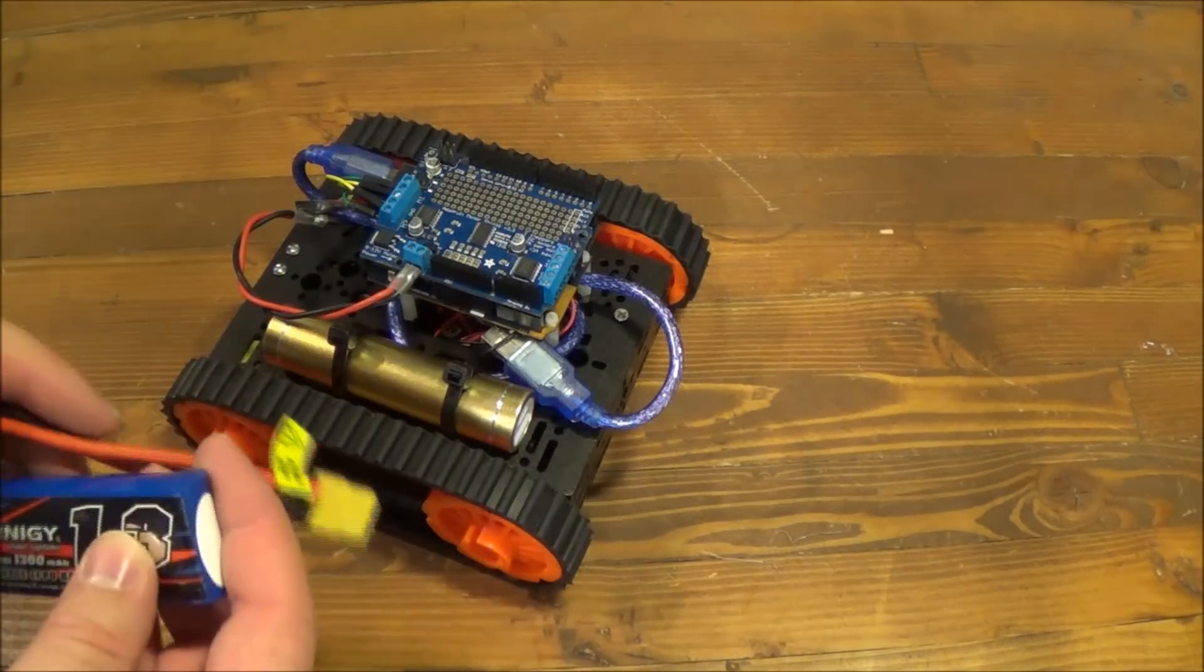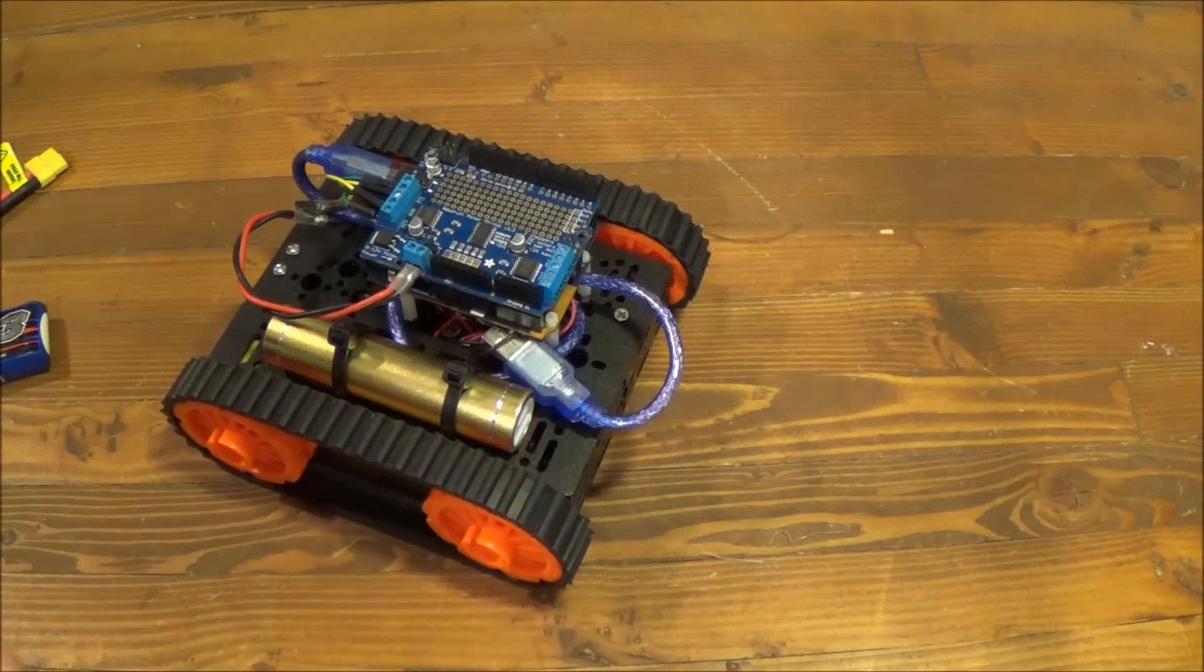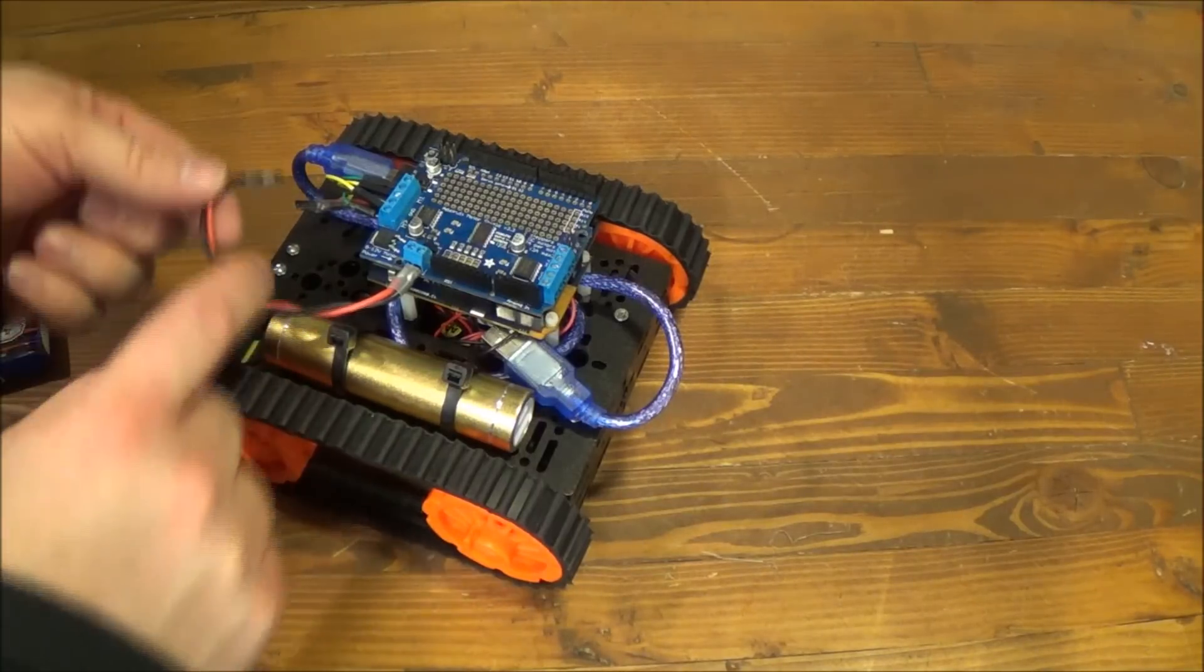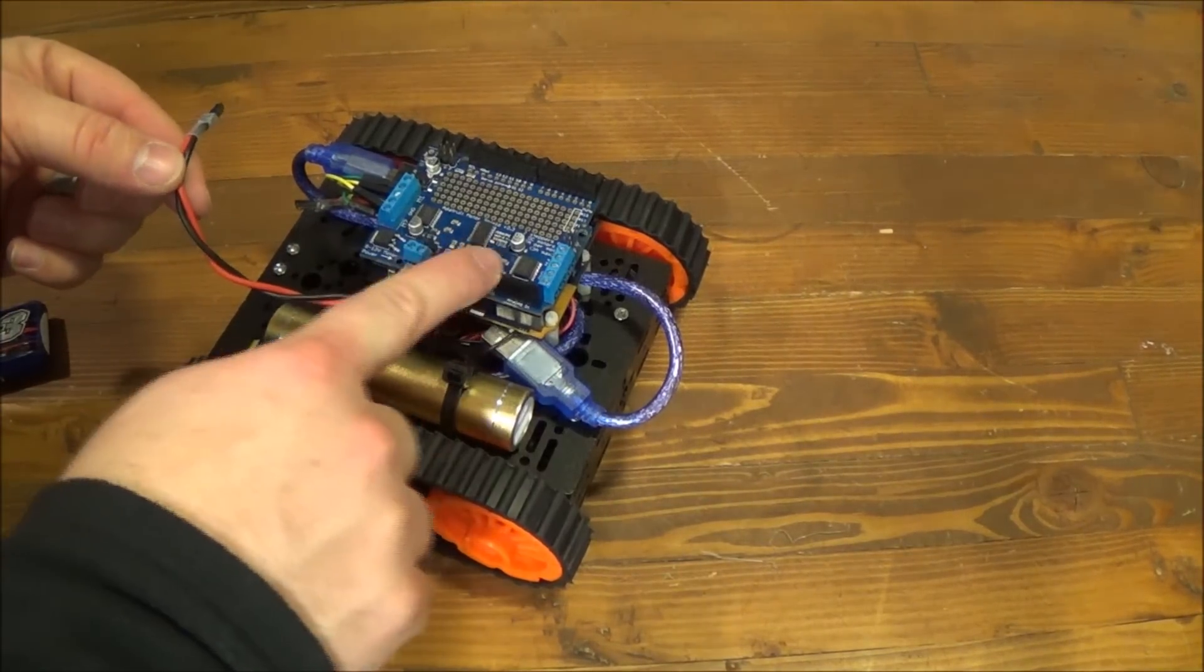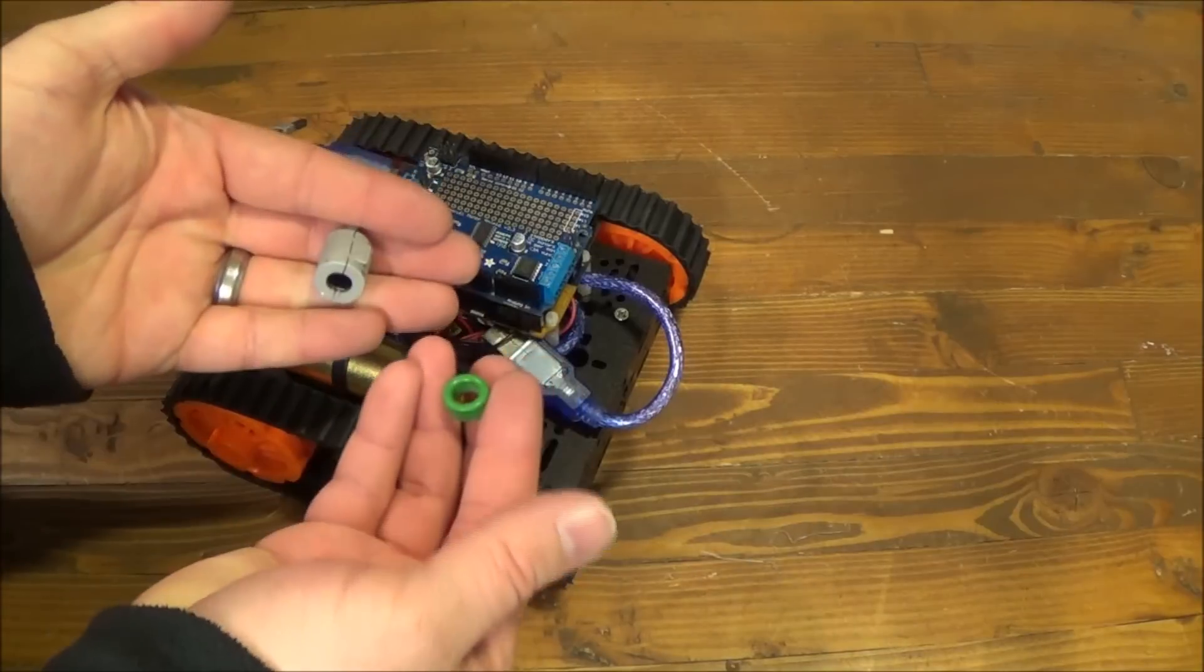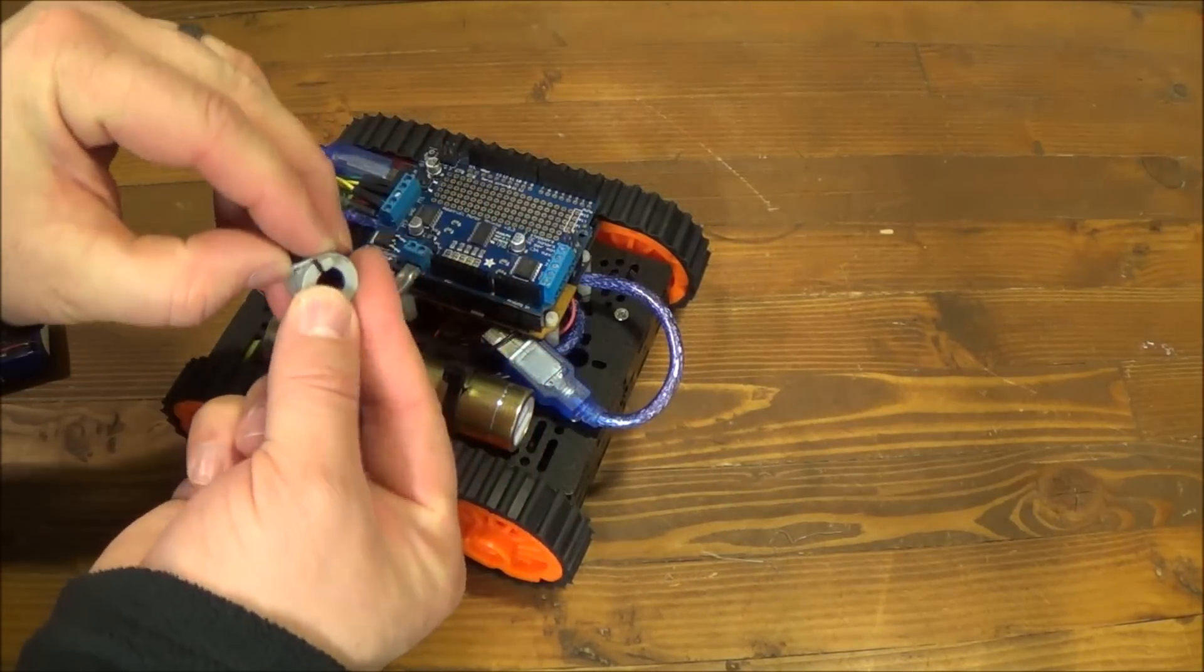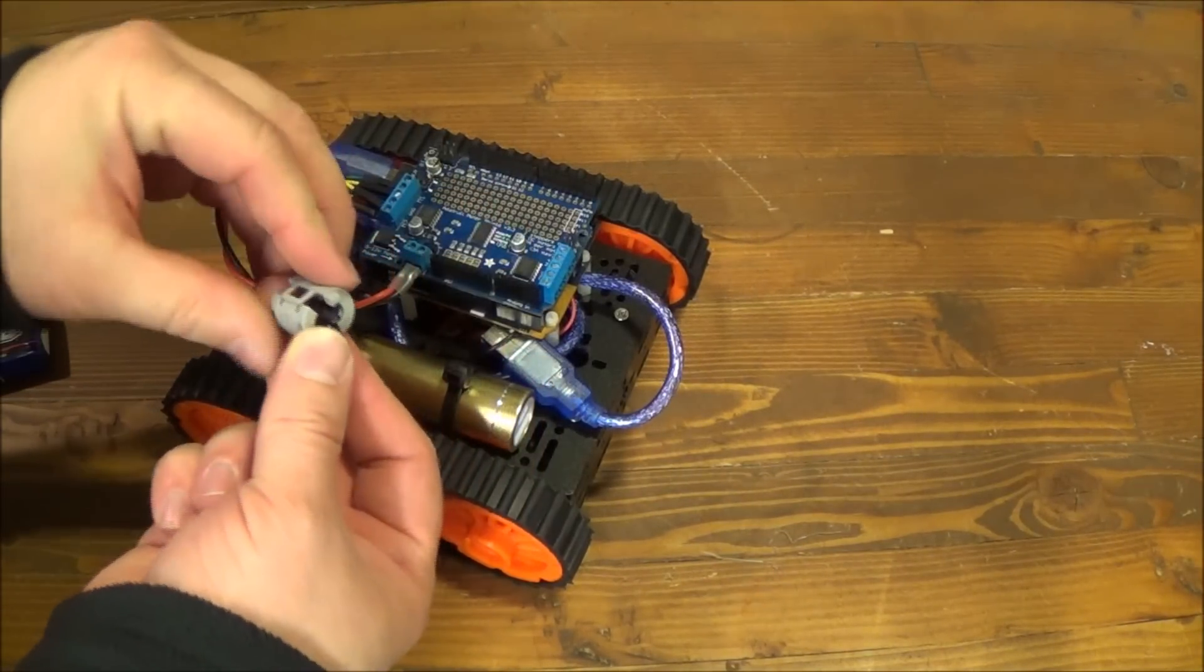One thing to note though, if you're using a single power source, you will want to put a choke on the wires coming from your motor driver. These are both examples of chokes. This is a split choke so you can put this on after the fact.